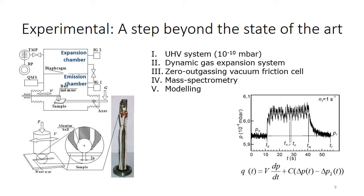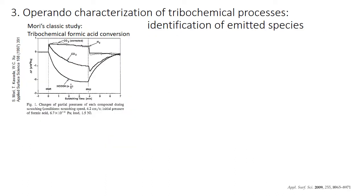It is necessary to use mass spectrometry to distinguish between various emitted species, and also to apply correct models to identify these species and obtain information about the chemical reactions underlying the emission processes.